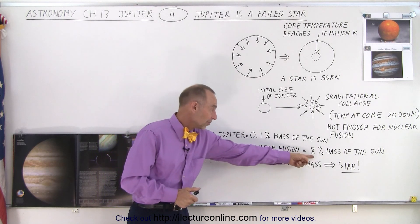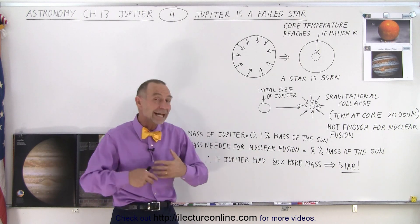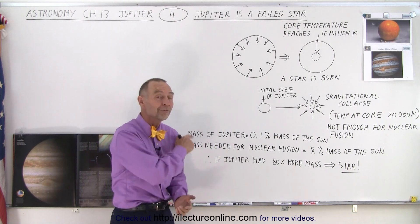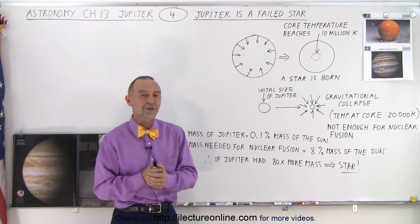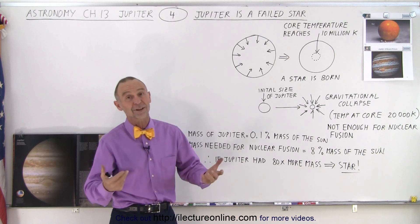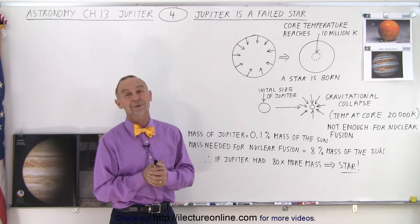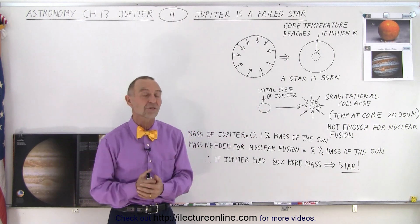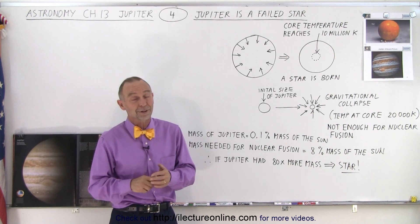So 8 percent compared to 0.1 percent — that's a factor of 80. In other words, if Jupiter had been 80 times as massive, it would have become a star. It just failed at becoming one; it just couldn't grab enough matter in our solar system as it was forming. The Sun probably got the vast majority of it, and Jupiter could not grow to the size it needed to become a star, as has happened in billions and billions of other solar systems throughout our galaxy alone. That's why we can call Jupiter a failed star.